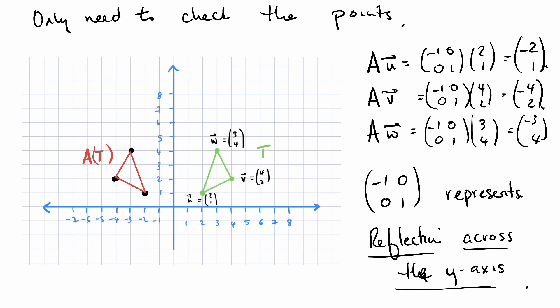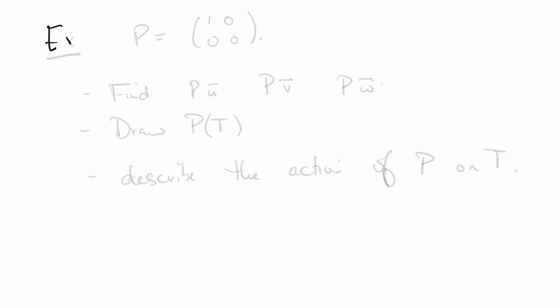Here's an exercise for you. Say P is the matrix 1, 0, 0, 0. Find PU, PV, and PW. Draw PT in the same way as we did before. And describe the action of P on T and therefore on R2.